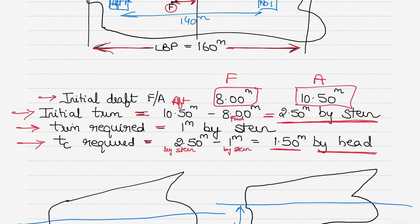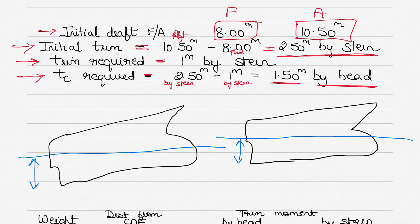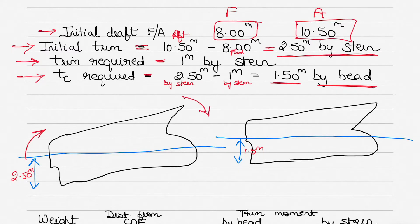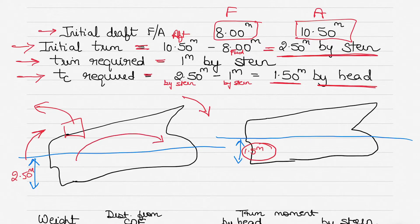As you can see, the aft trim is 2.5 meters — the stern is submerged relative to the forward draft by 2.5 meters. We need to reduce it to 1 meter by stern. To achieve this, we bring the stern out of the water and bring the head down. When cargo is discharged from aft, the stern rises. When water is transferred from aft to forward, weight is lost from the stern and added to the forward part.